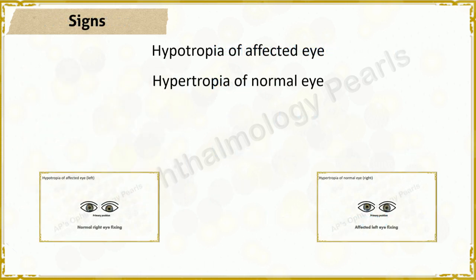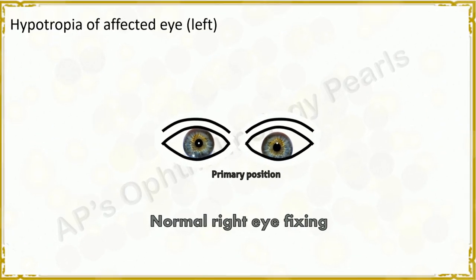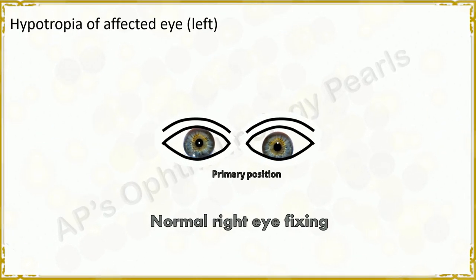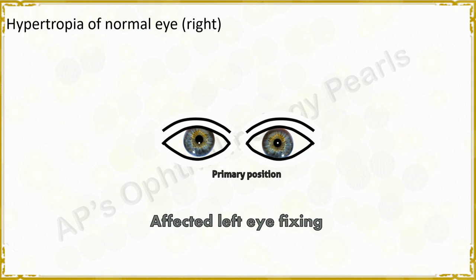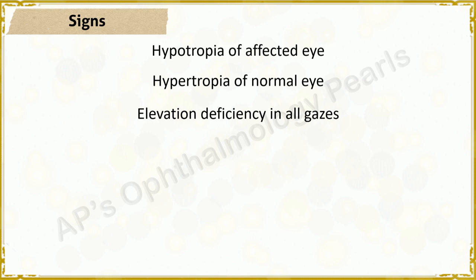Coming to the signs, the position of the globe in the primary position depends on which eye is fixing. Most commonly, the normal eye is fixing, so the affected eye is hypotropic due to deficient elevation. However, sometimes the affected eye is used for fixation — either due to or without amblyopia in the normal eye — in which case the normal eye is found to be hypertropic. There is a monocular limitation of elevation in all three horizontal positions: abduction, straight ahead, and adduction.